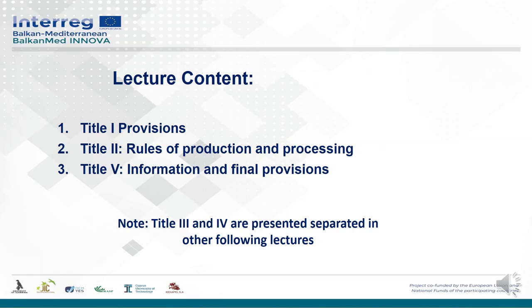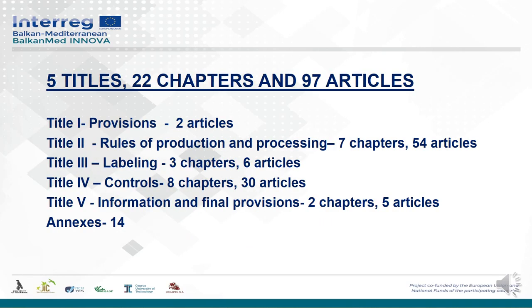I will remind again which are the sections of this lecture. Title 1: Provisions. Title 2: Rules of Production and Processing. In this part we will speak about Rules of Production and Processing — one part of it, as one part was explained in the previous lecture and it is not concluded yet, so we will continue in the next lecture too. Just to have a general explanation: this regulation has five titles, 22 chapters in total, and 97 articles.